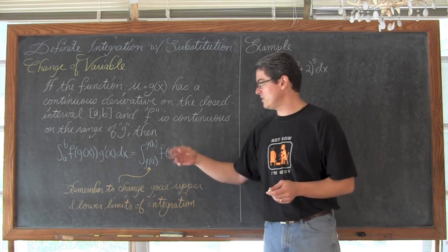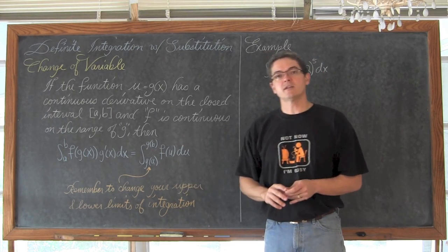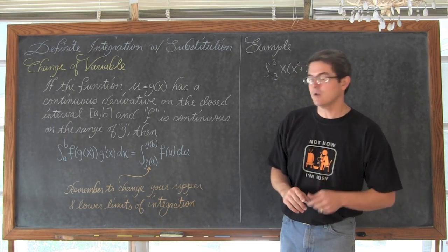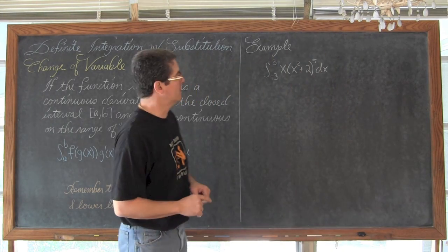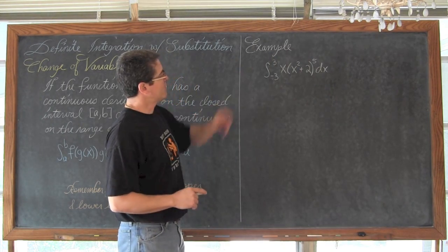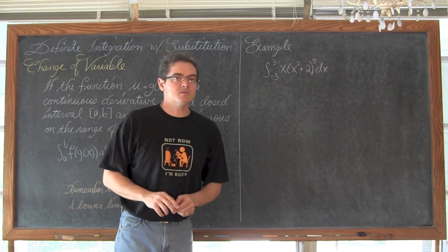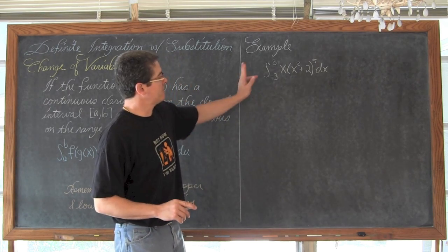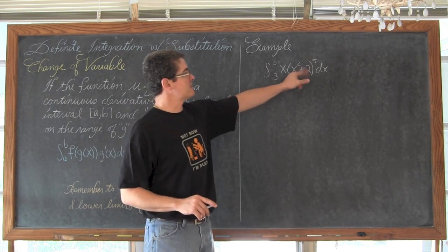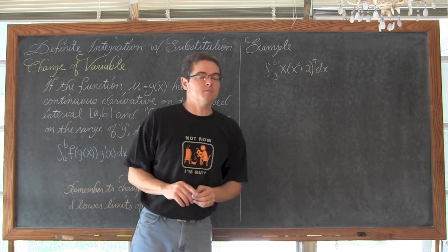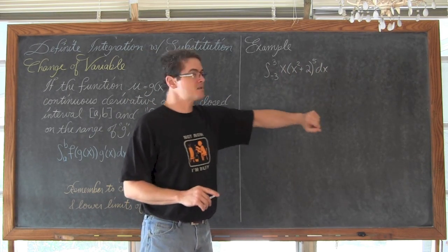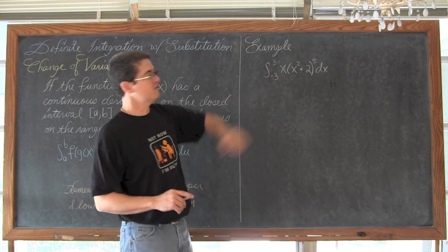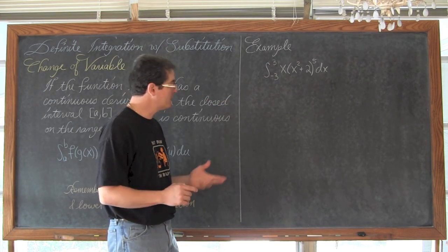We can just leave it in terms of u, find the definite integral, and we are done. Here is what it is going to look like. Our first example is: we want the definite integral of x times (x squared plus 2) to the fifth power dx from negative 3 to 3.